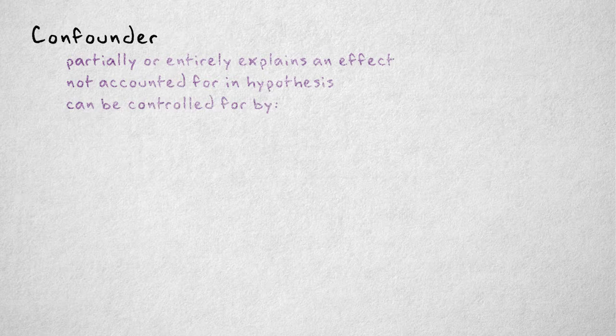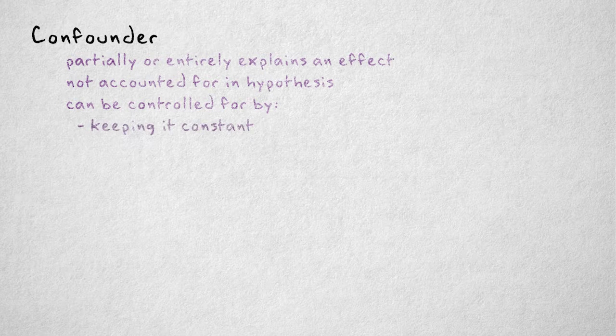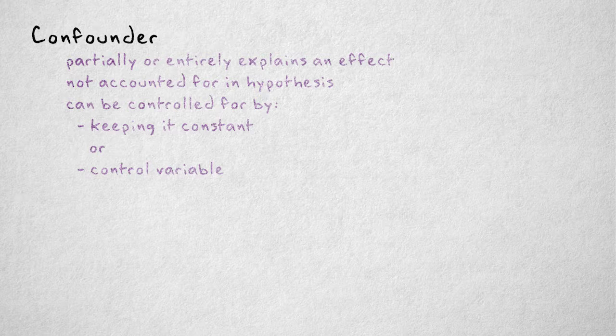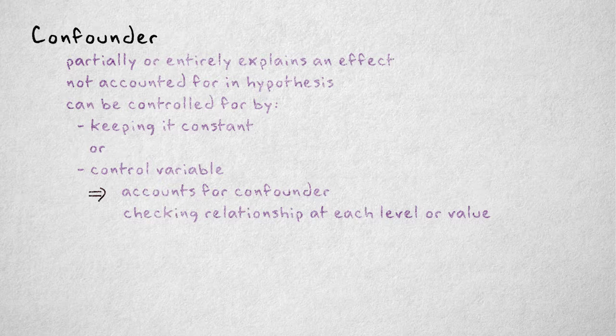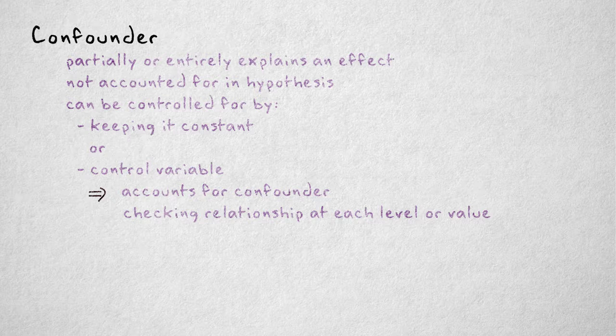A possible confounder can be controlled for by keeping the property constant or by turning it into a control variable. A control variable accounts for a possible confounder by measuring the relevant property and checking the relationship between the variables of interest at each value or level of the control variable.